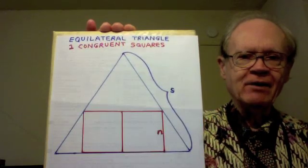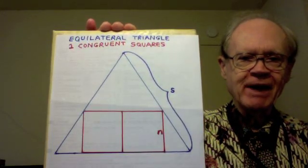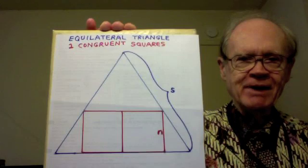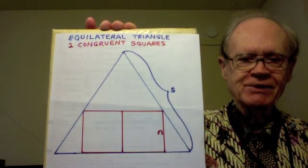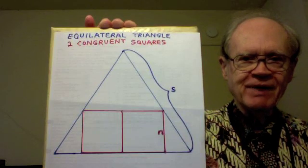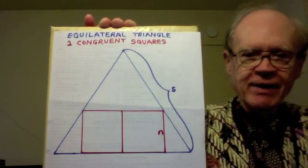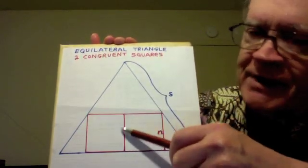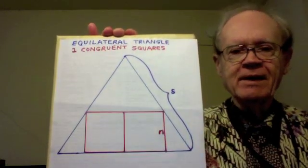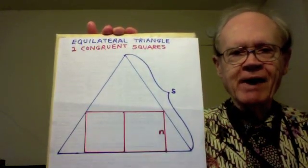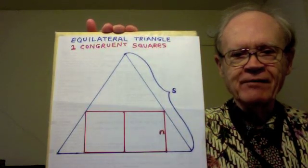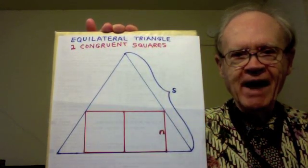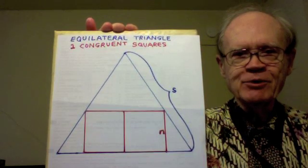Here is the challenge. We have an equilateral triangle, meaning all three sides are the same length, and inscribed in it are these two congruent squares resting on the base of the equilateral triangle and sharing this side in the middle. Each side of the equilateral triangle has length s, and each side of each square has length n.